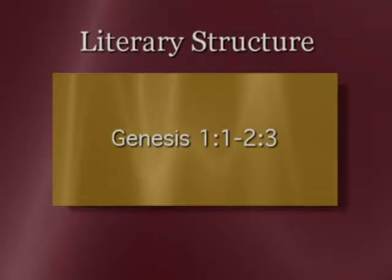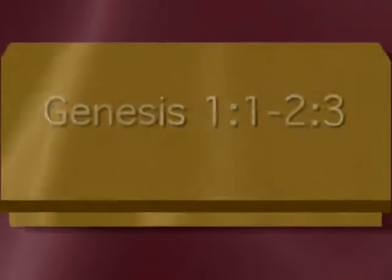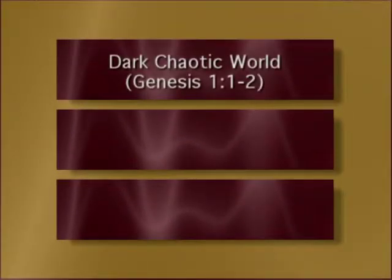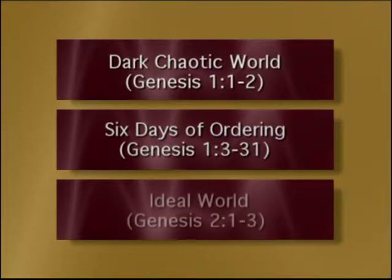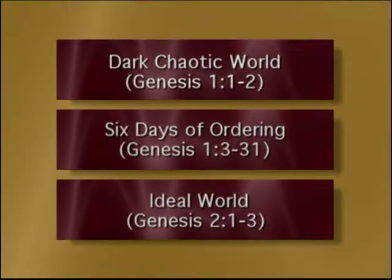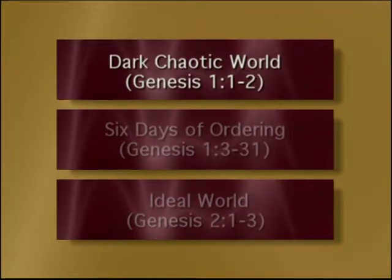We should begin by noting that this passage has three major steps: a beginning, a middle, and an ending. Moses' creation account begins with chapter 1 verses 1 through 2, which we may summarize as the dark, chaotic world. Chapter 1 verse 3 through chapter 2 verse 1 forms a middle section containing the six days of creation, or what we will call the six days of ordering creation. Finally, chapter 2 verses 1 through 3 is the Sabbath day, or as we will call it, the ideal world. We will explore all three portions of this structure in this lesson, beginning with the dark, chaotic world.